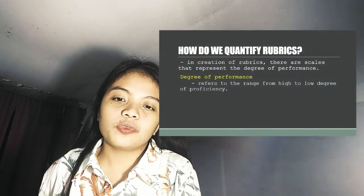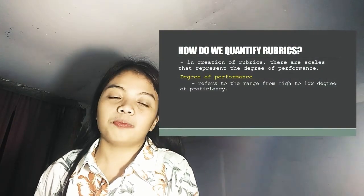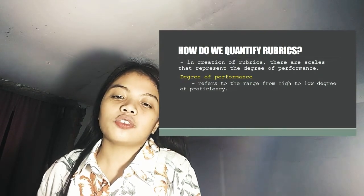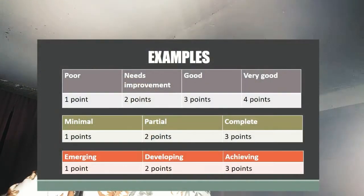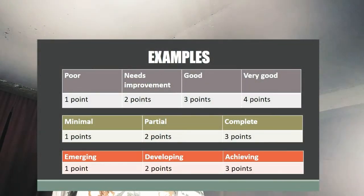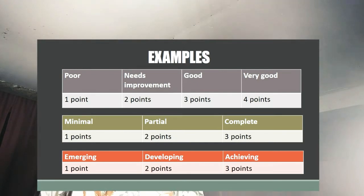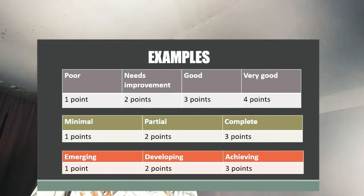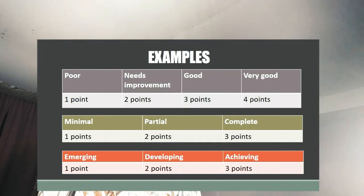How do we quantify rubrics? In the creation of rubrics, there are scales that represent the degree of performance. Degree of performance refers to the range from high to low degree of proficiency. For example, the degrees of proficiency are: poor, needs improvement, good, and very good. The highest degree is very good, equivalent to 4 points, and the lowest is poor, equivalent to 1 point.